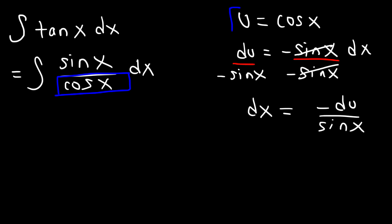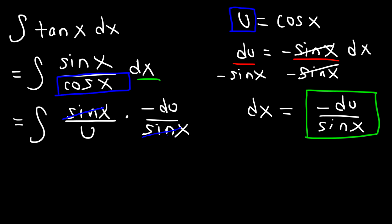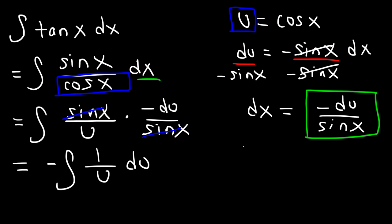Let's replace cosine x with the u variable and replace dx with negative du over sine. So we're going to have the integral of sine x divided by u times negative du over sine. We can cancel sine x, and moving the negative to the front gives us negative integral of 1 over u du.